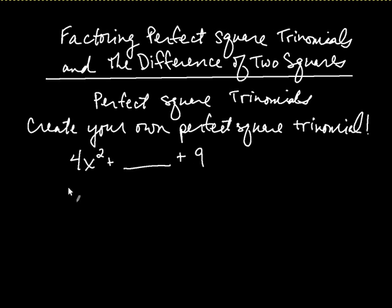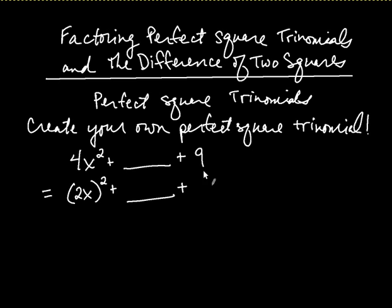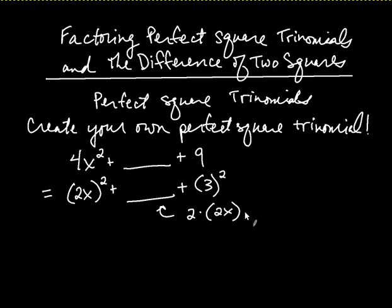You can only play this game if you have perfect squares on the ends. You have to say to yourself, what do you square to get that first term? That would be 2x. So 4x squared is (2x) squared. And then what squared gives 9? That would be 3. So once you identify what it is that you're squaring, in the middle you put the number 2 — it's always the number 2 for perfect square trinomials — times, in this case, the 2x times the 3.